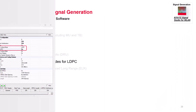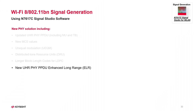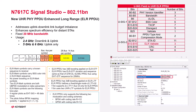Finally, let's take a look at the Enhanced Long-Range (ELR) PPDU format. It uses a fixed 20 MHz channel in 2.4 GHz for both uplink and downlink. In 5 GHz and 6 GHz bands, it's uplink only. Signal Studio has a dedicated UHR-ELR PPDU option to create these frames easily.